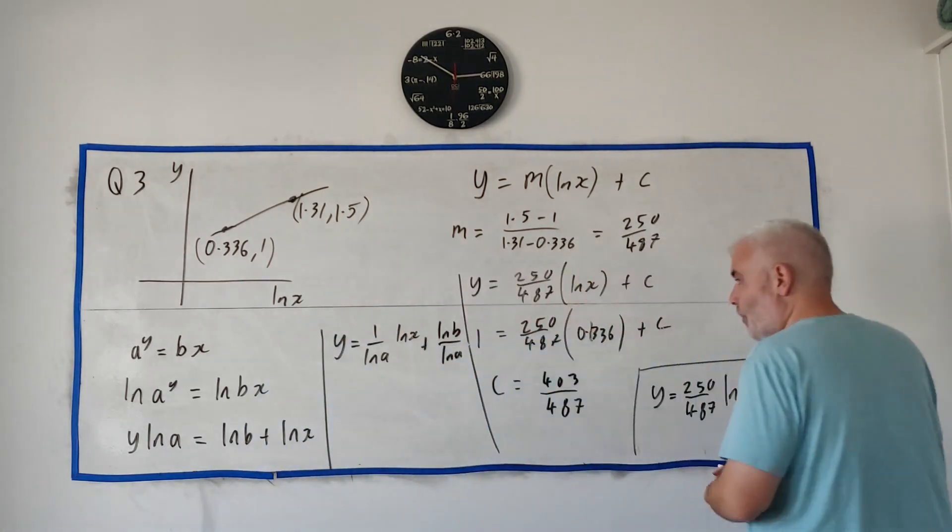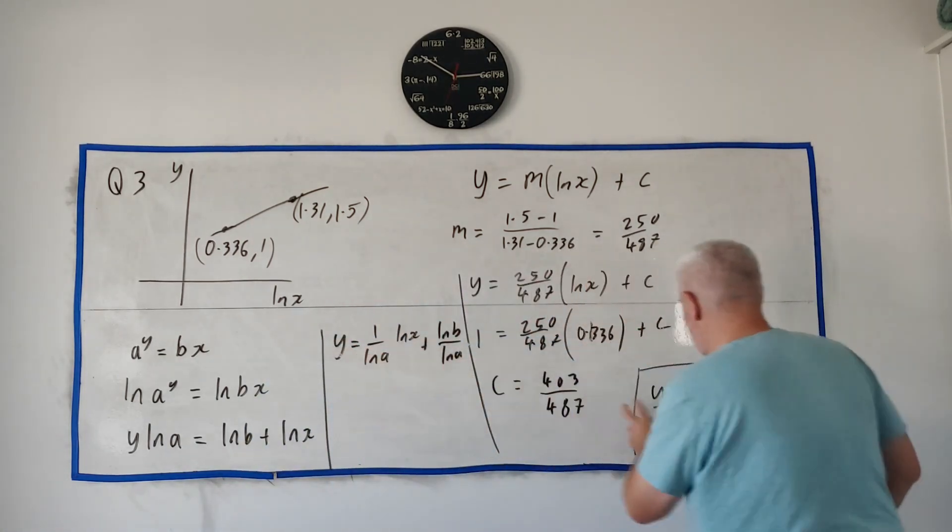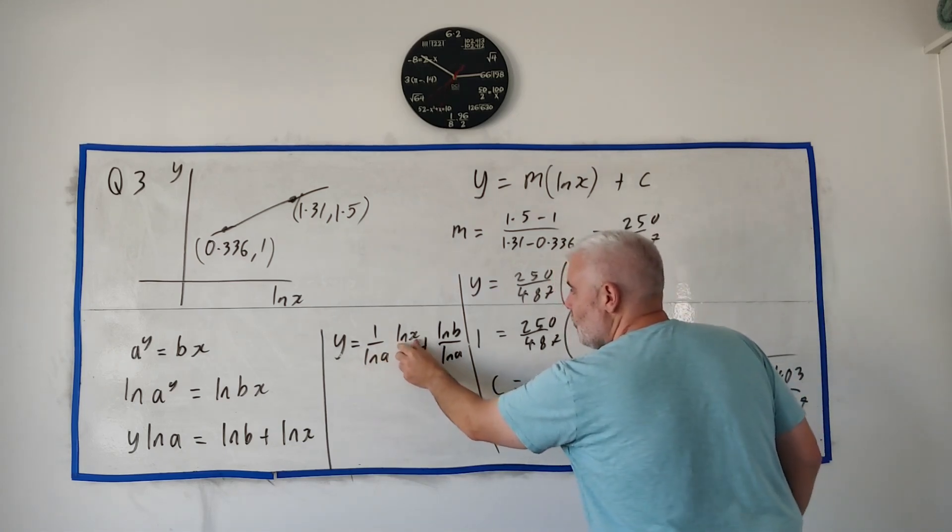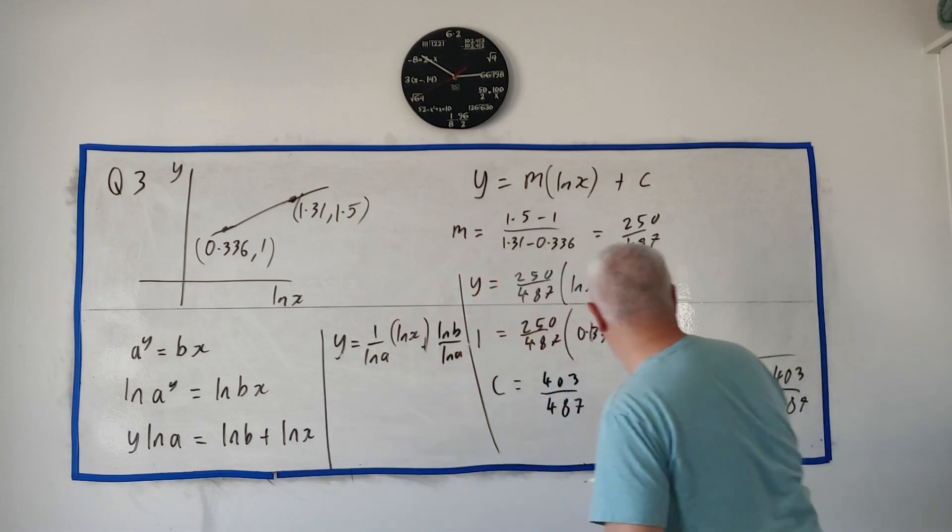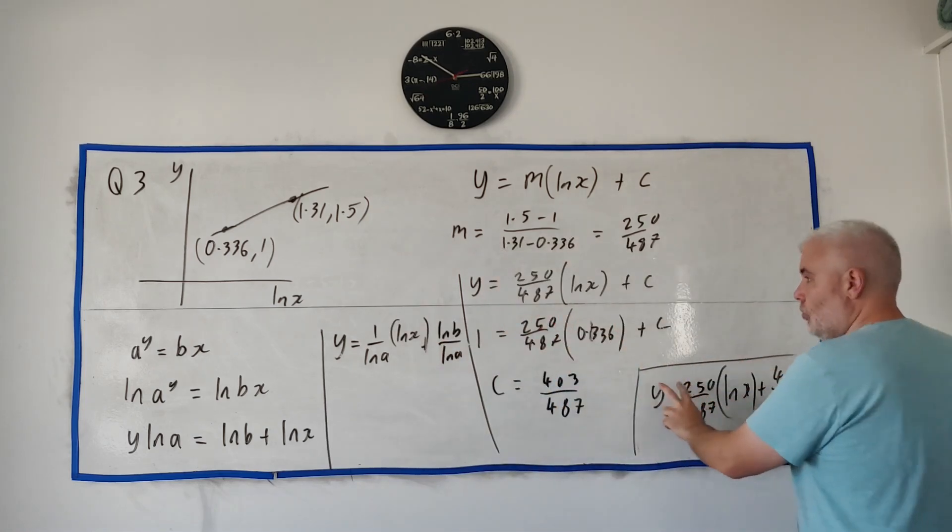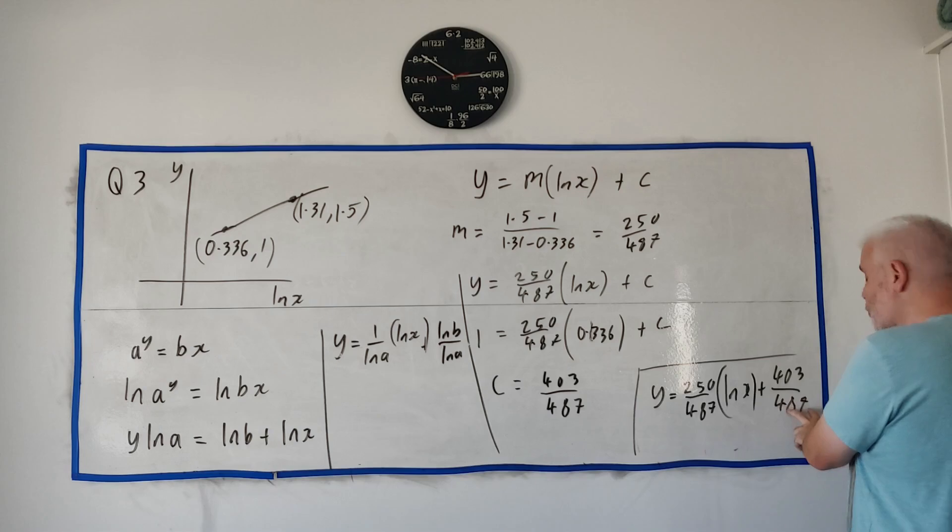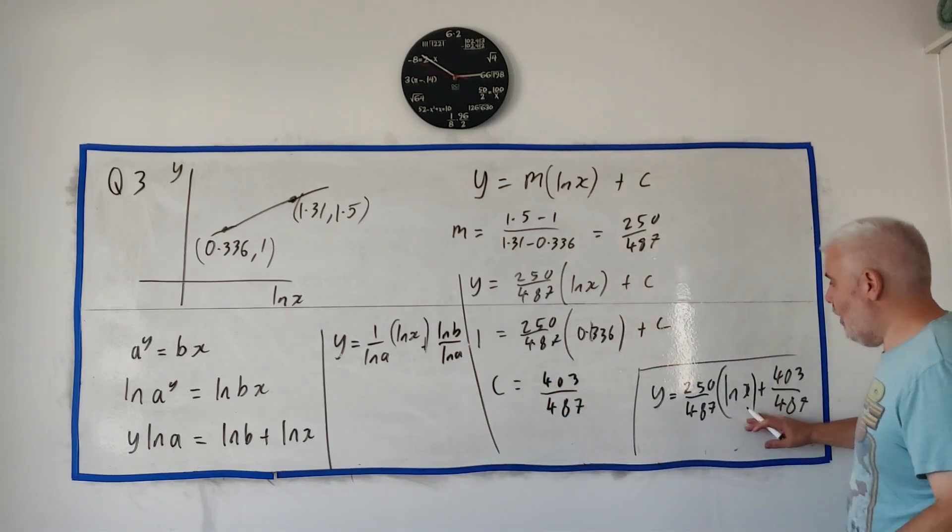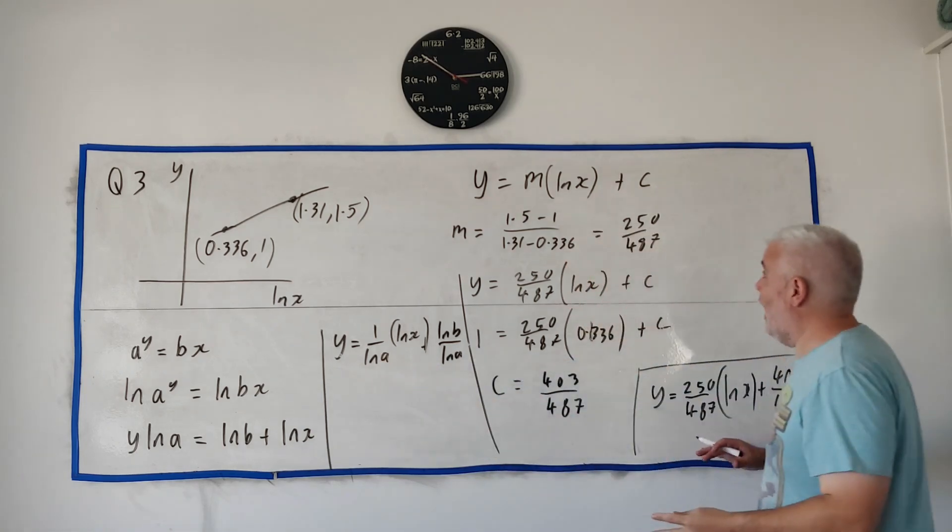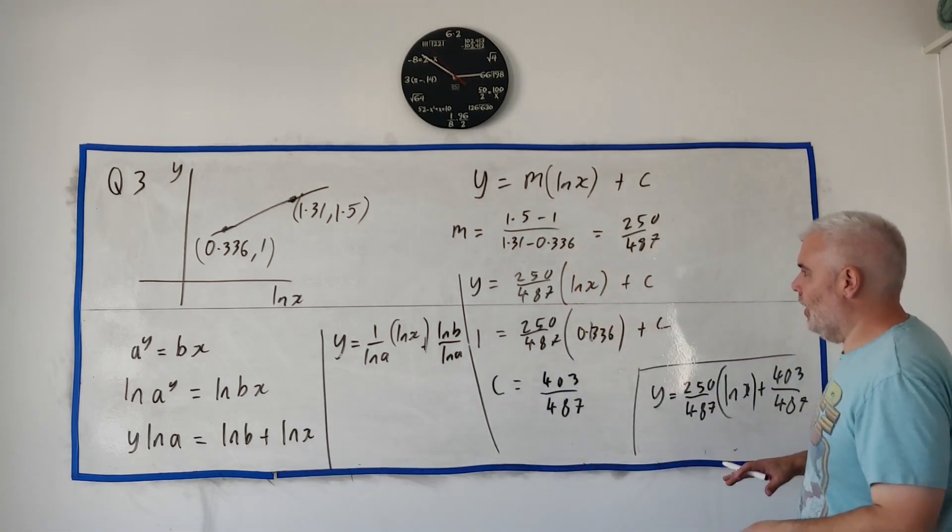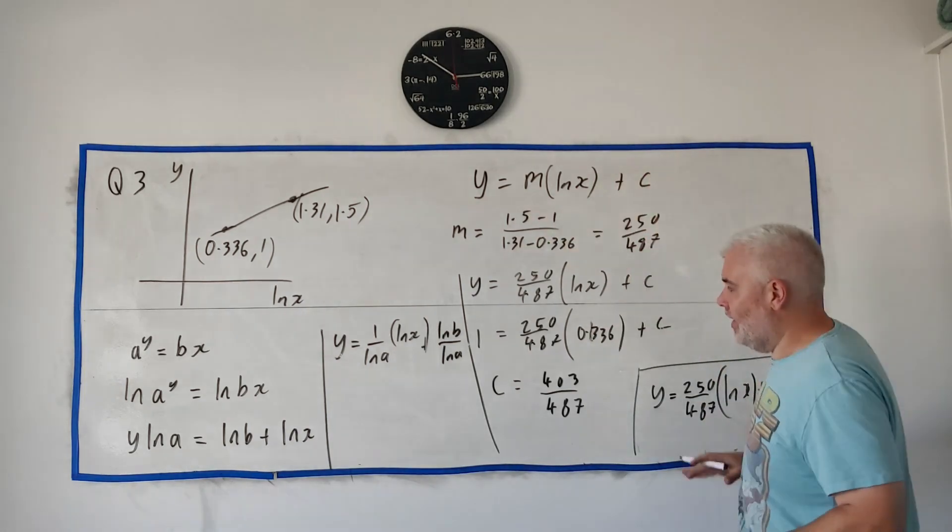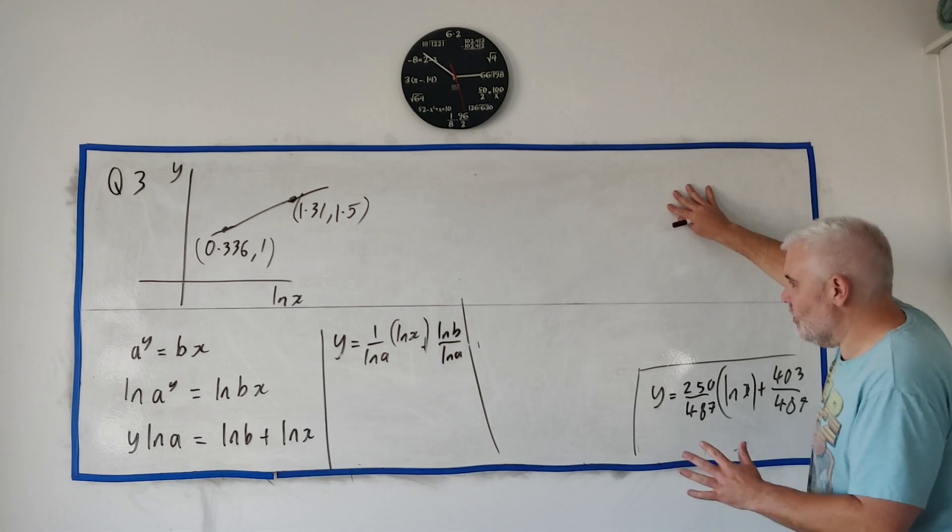And then working with this line, I got this equation here. Let's look at them both together. y equals something times natural log x plus something. Something times both of them. Plus something. I can now just equate out some of these to get answers. Let me clear off this top corner here and I should be able to fit the answer in. I always have bad planning.